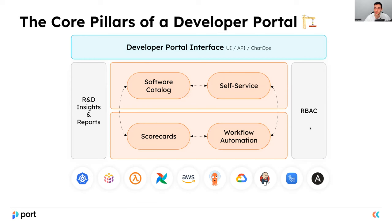The developer portal is surrounded by a strong role-based access control layer, which makes sure that only the proper personas see the information they need, creating tailored views and reducing cognitive load. The developer portal also features a convenient interface to consume information — either through the UI, an API, or something such as a chat ops or chatbot. And alongside that, we have the R&D insights and reports layer, which gives us visualizations over what developers are doing in the portal, what actions are being executed and their status.